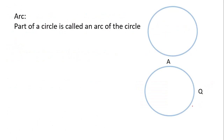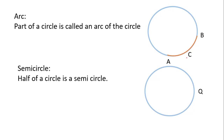Next definition is arc. Arc means a part of a circle is called an arc. As you can see here, if I take any one part of this circle, it is called an arc. We can take from here to here as a part of this circle, and that part will be called an arc. So here ACB is an arc.